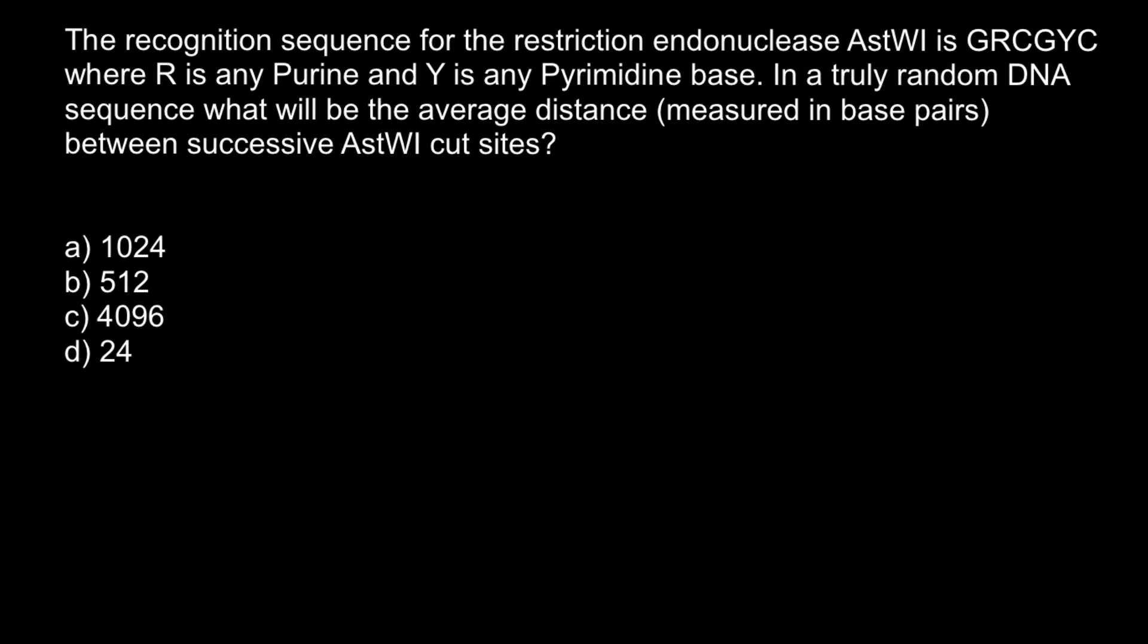So here's the problem. The recognition sequence for the restriction endonuclease is GRCGYC where R is any purine and Y is any pyrimidine base. In a truly random DNA sequence, what will be the average distance measured in base pairs between successive AstWI cut sites?